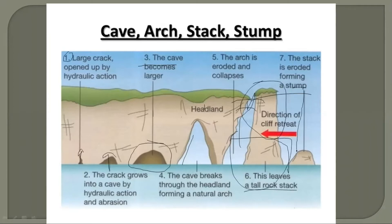We have a sea stump here — a small remnant of what was once a sea stack. You can see a variety of erosional landforms ranging from the small initial crack through the cave, arc, stack, and finally a stump. The continuous action of waves means this stump too may eventually be eroded away.